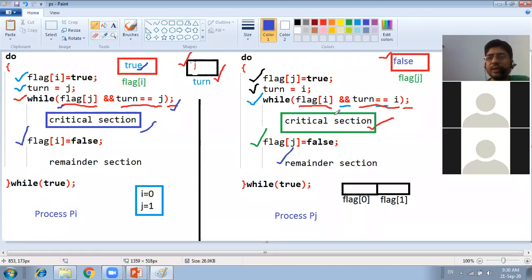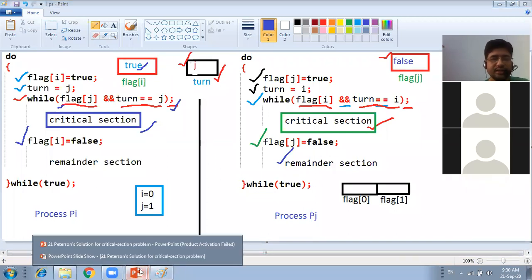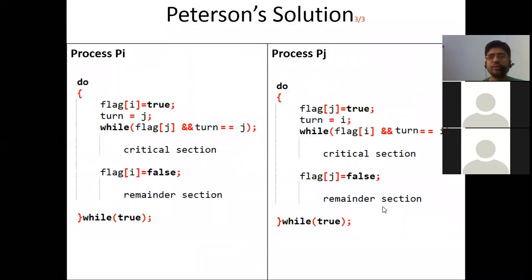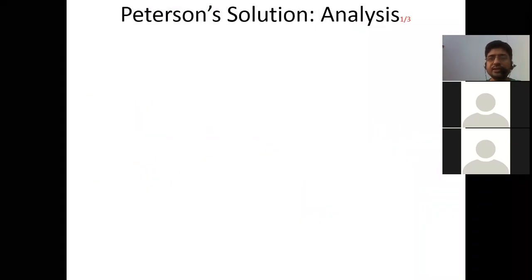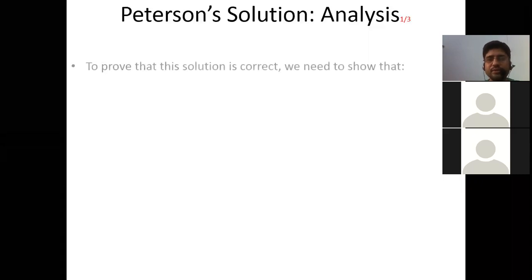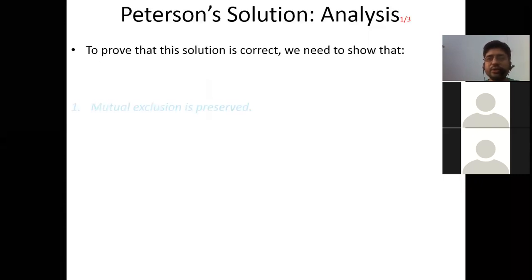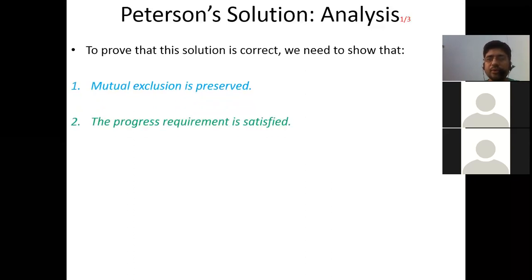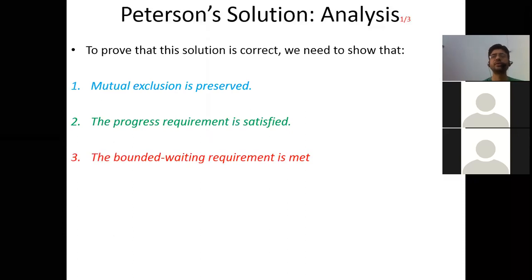In the examination, if you get this question, you have to explain in your own words how this solution solves the critical section problem by satisfying all three features. To prove that this solution is correct, we need to show: mutual exclusion is preserved, the progress requirement is satisfied, and the bounded waiting requirement is also met.